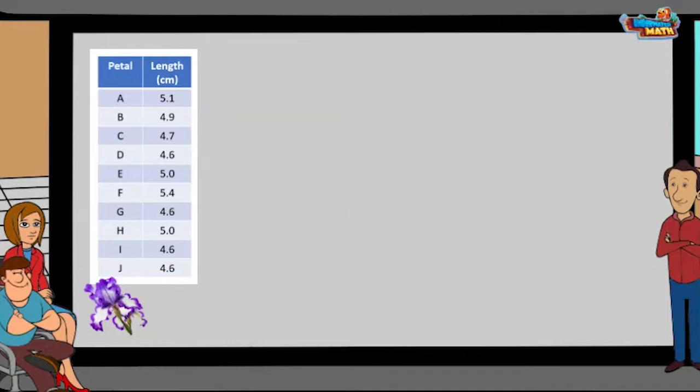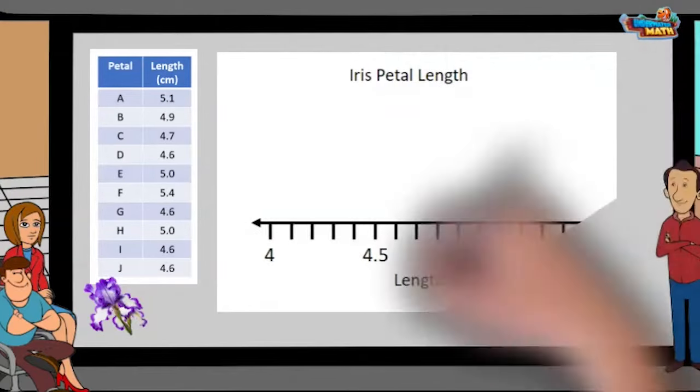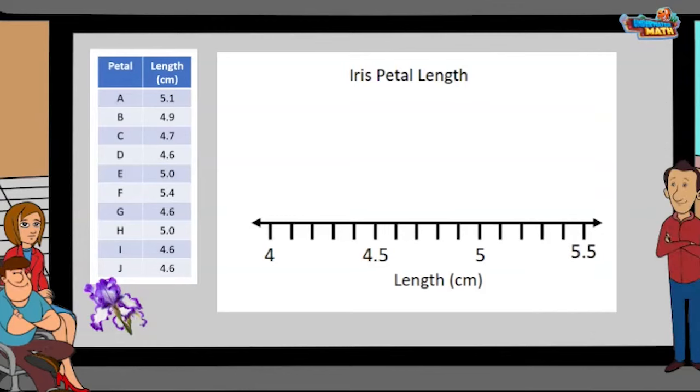Where should we start? The highest number in the chart is five and four tenths and the lowest number is four and six tenths. Let's start by making a number line that starts at four and ends at five and five tenths.